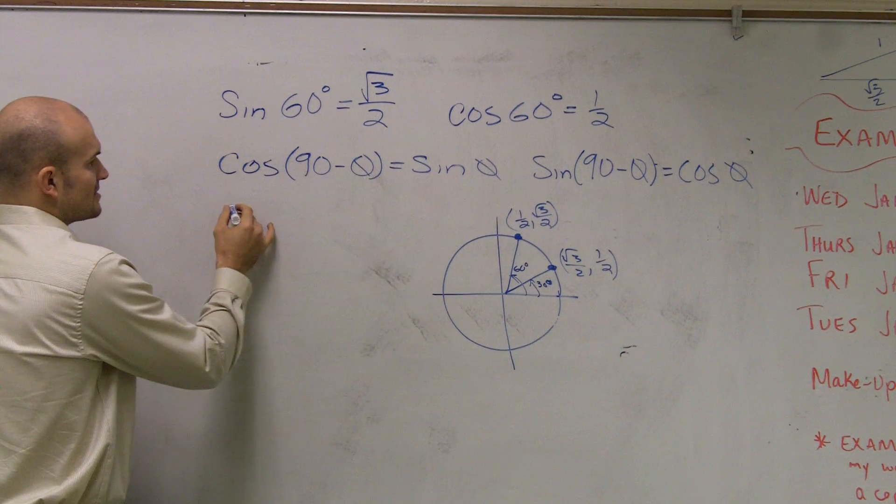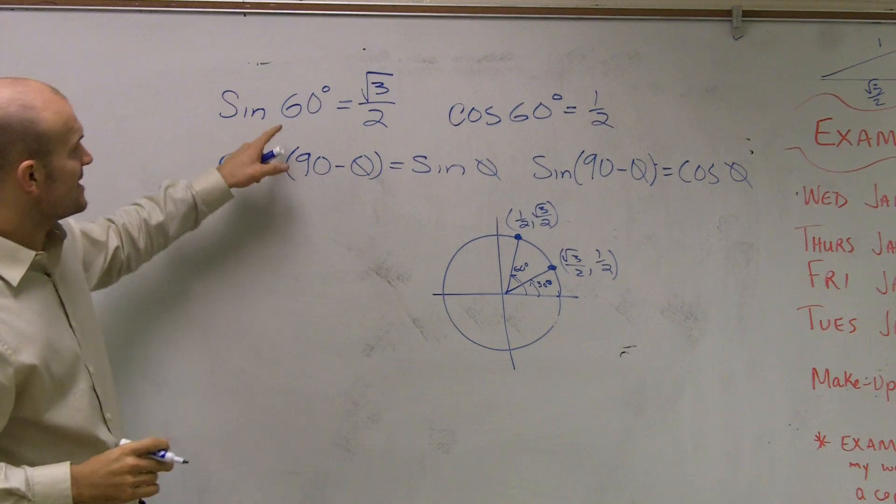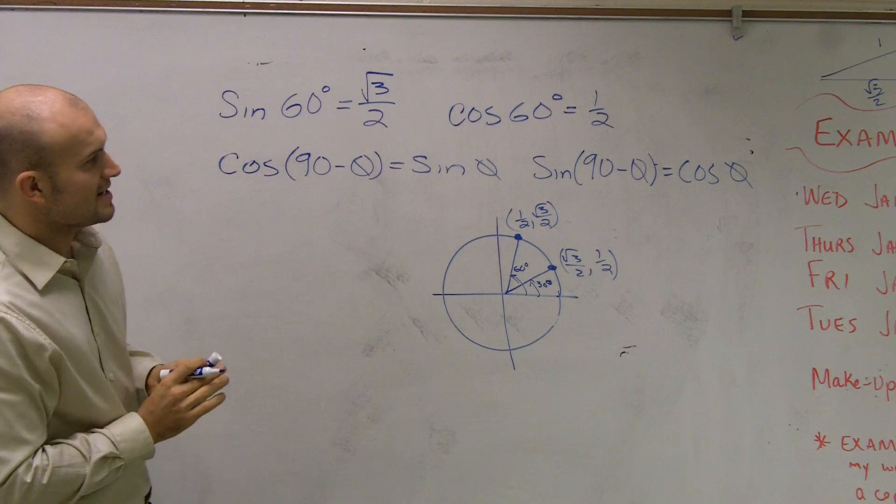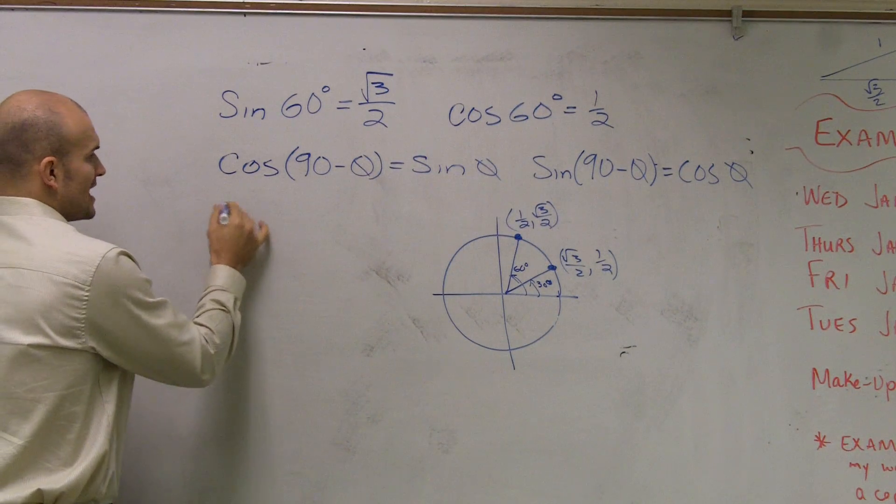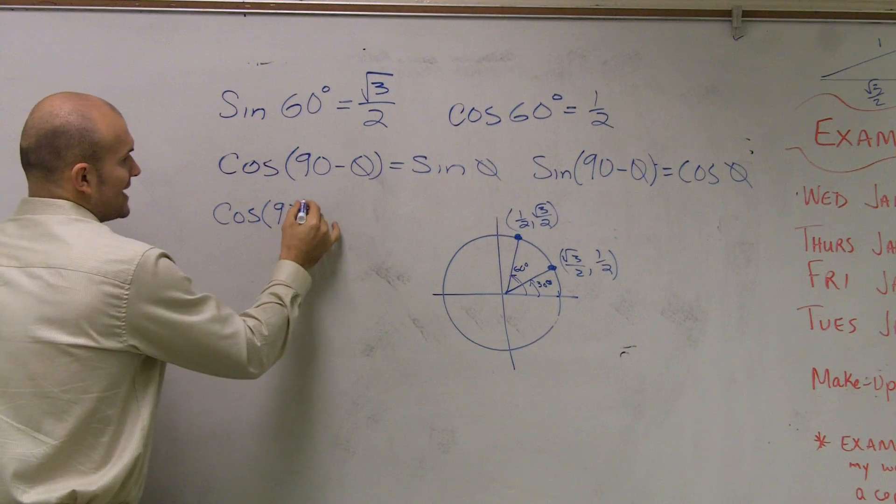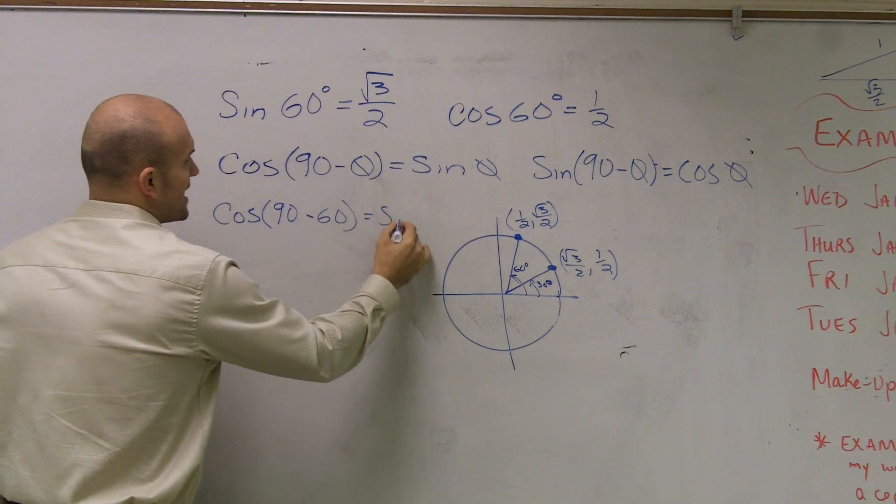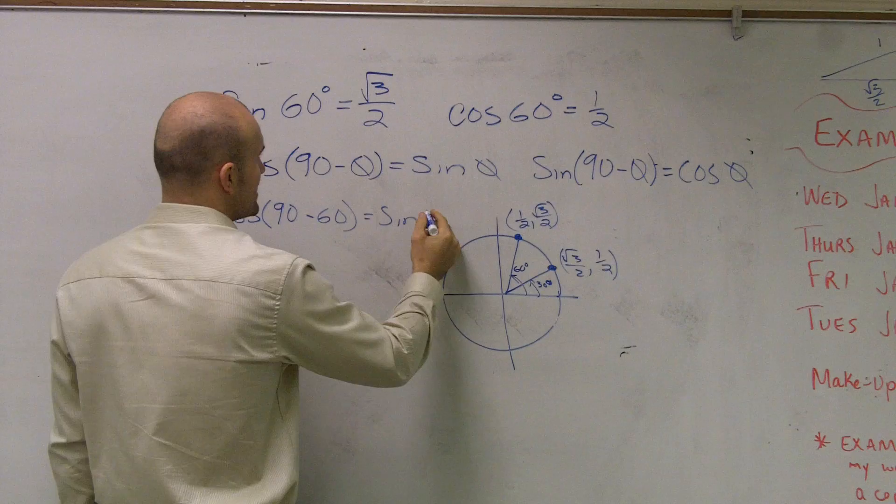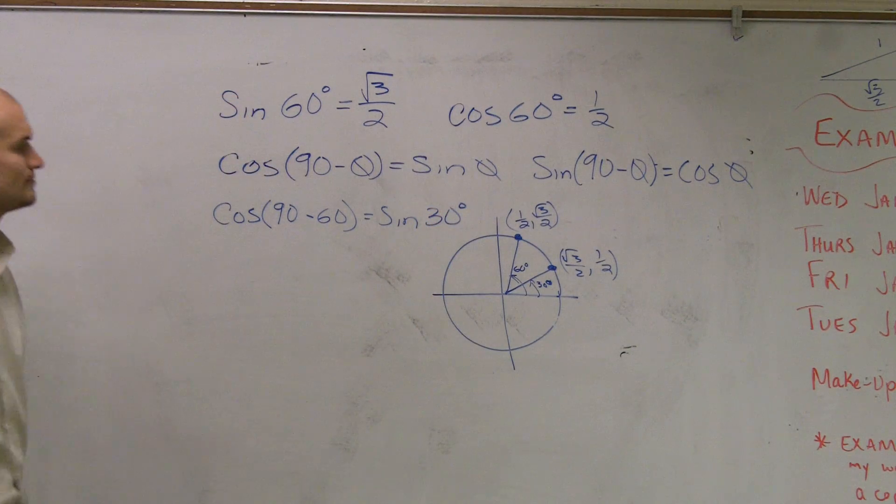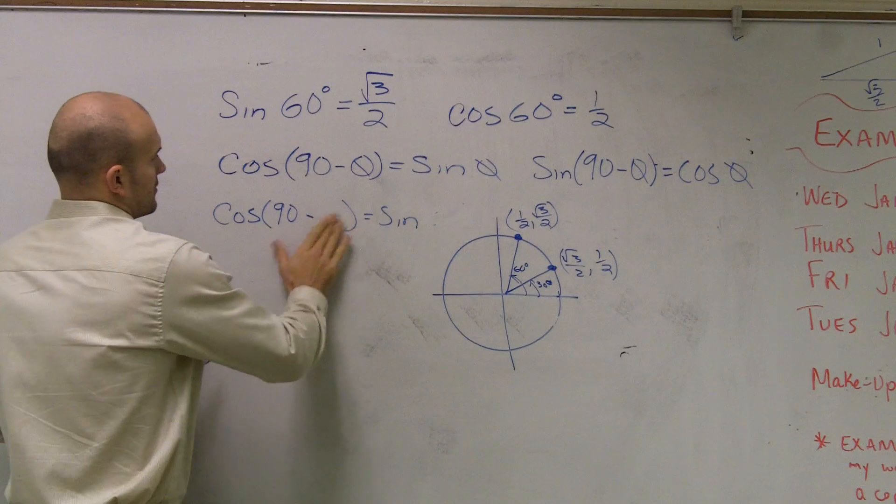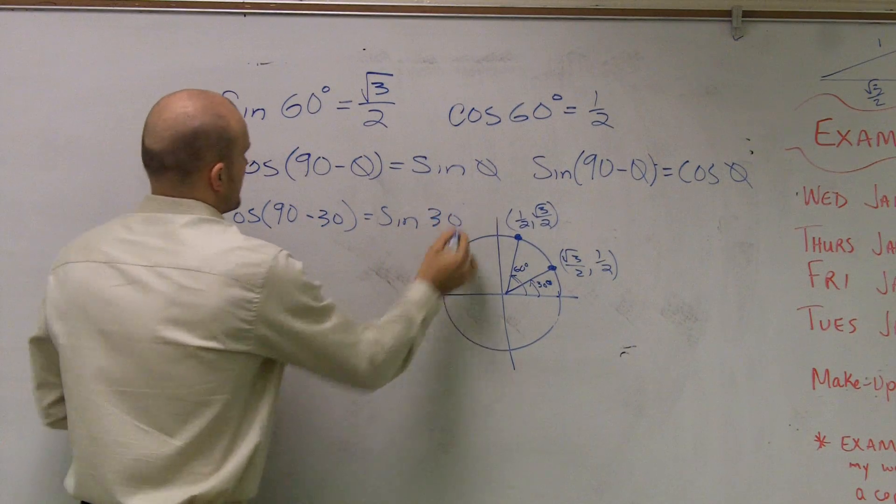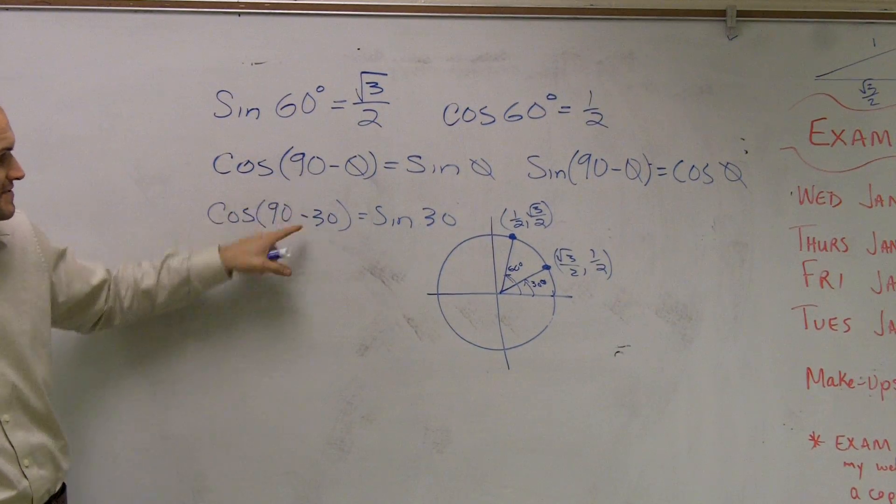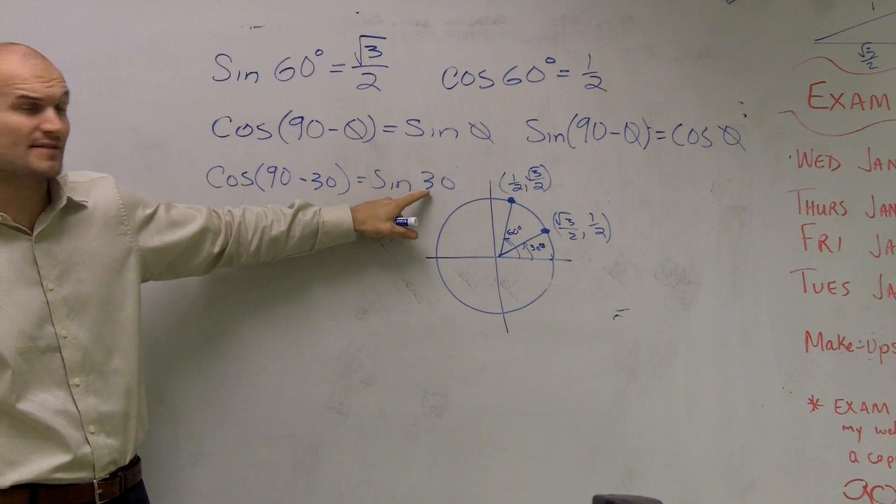If I say, what is, if I say the cosine of 60 is, cosine of 60 degrees is 1 half. So the cosine of 90 minus 60 degrees is the same thing as, well, if cosine of 60 degrees, it's actually going to be the same as sine of 30 degrees. Let's see if that works. What is the cosine of 60 degrees?